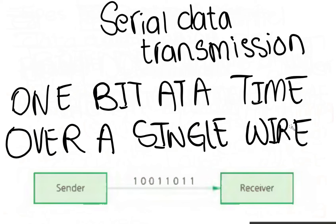Serial data transmission works well over long distances. However, the data is transmitted at a slower rate than parallel data transmission. Because only one channel wire is used, data will arrive at its destination fully synchronized — that is, in the correct order. An example of its use is when connecting a computer to a printer via a USB connection.